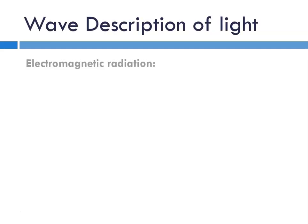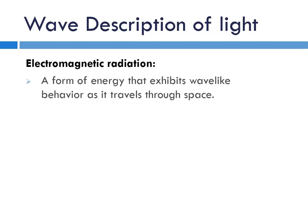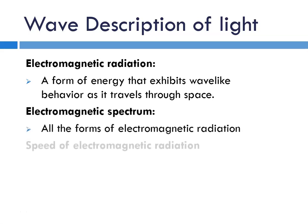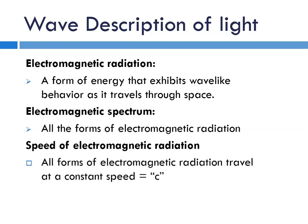What is the wave description of light? We're talking about electromagnetic radiation. That's defined as the form of energy that exhibits wave-like behavior as it travels through space, and all forms of electromagnetic radiation travel at a constant speed, given the symbol C, and C is equal to 3 times 10 to the 8th meters per second. That's the speed of light.